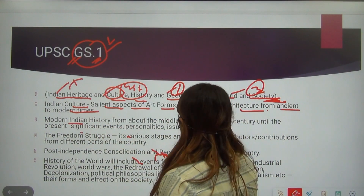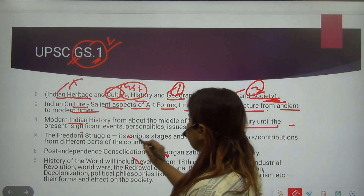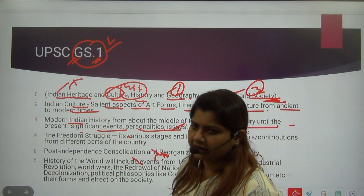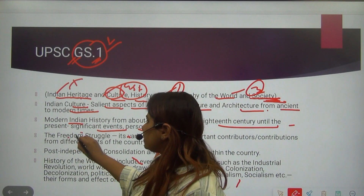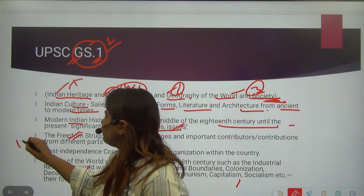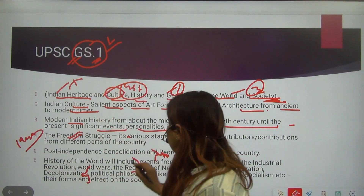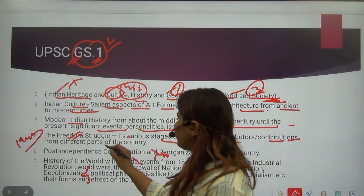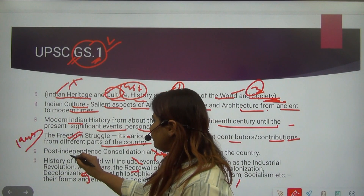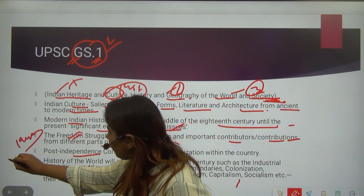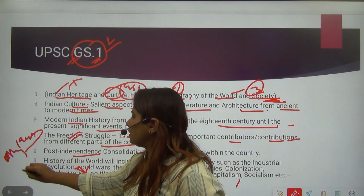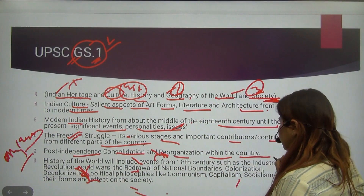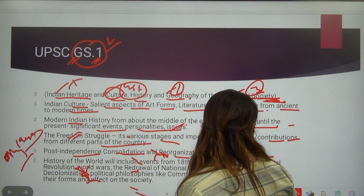In modern India, what will come from the 18th century up to the present — significant events, personalities, and issues — and the freedom struggle, meaning up to 1947. The freedom struggle will cover important contributions from different parts of the country. Post-independence means what happened after 1947 — the consolidation and reorganization within the country.